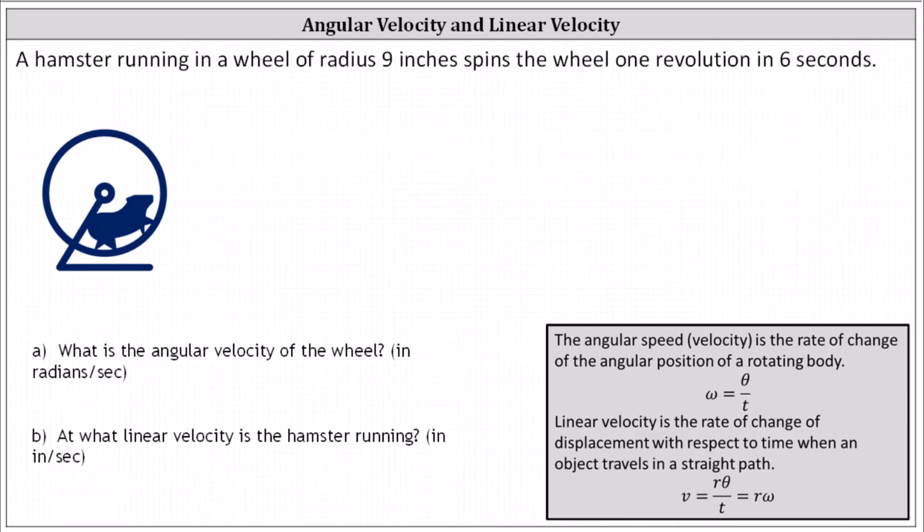A hamster running in a wheel of radius nine inches spins the wheel one revolution in six seconds. Part A: What is the angular velocity of the wheel in radians per second?